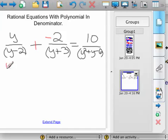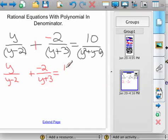So we'd have y over y minus 2 plus negative 2 over y plus 3 equals 10 over, and plus minus is a plus minus, and y and y, and 6 breaks into 3 and 2. And so we've got that bottom factored.